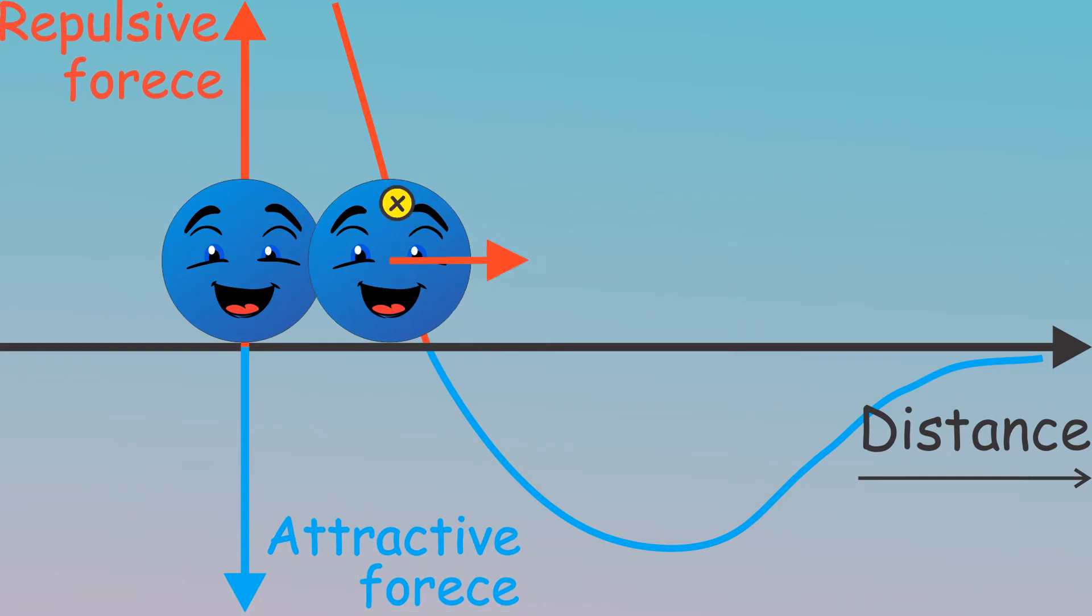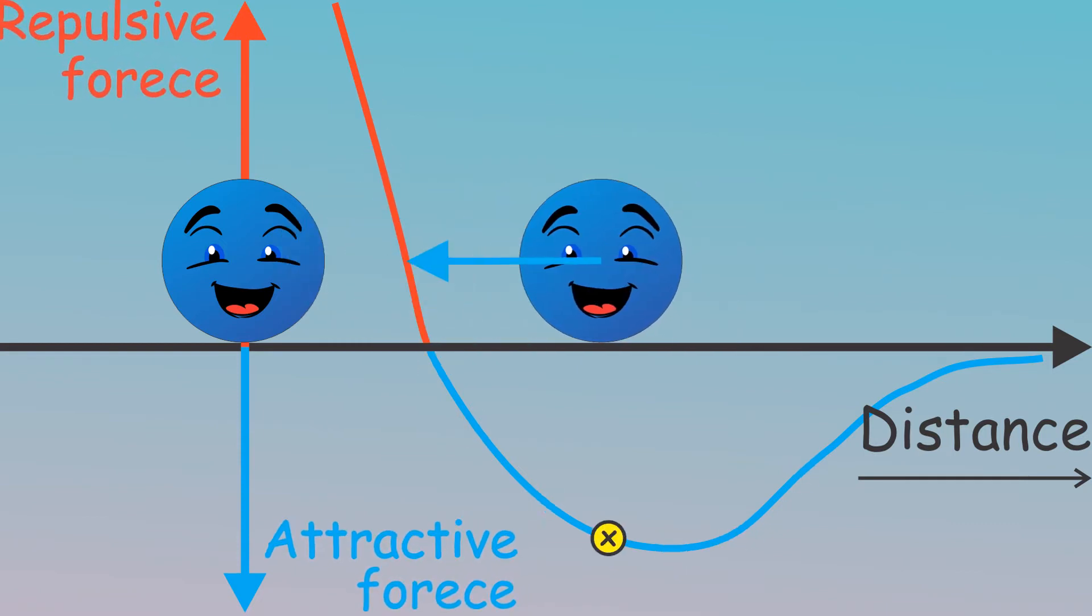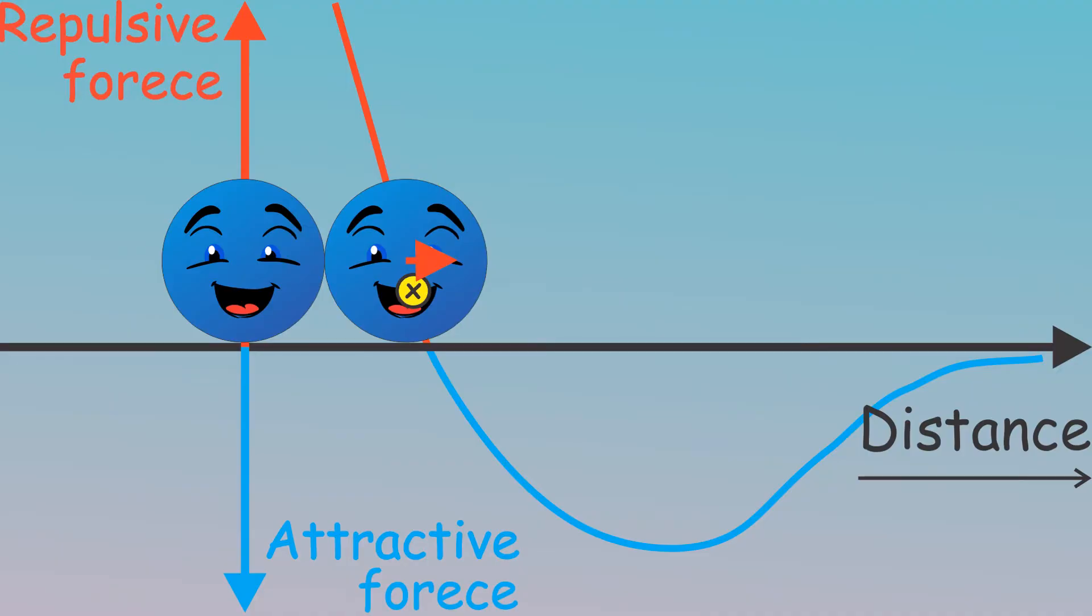Therefore both attractive and repulsive forces act on the molecules. On the boundary surface of water and air, the density of water changes abruptly in a layer of few molecules.